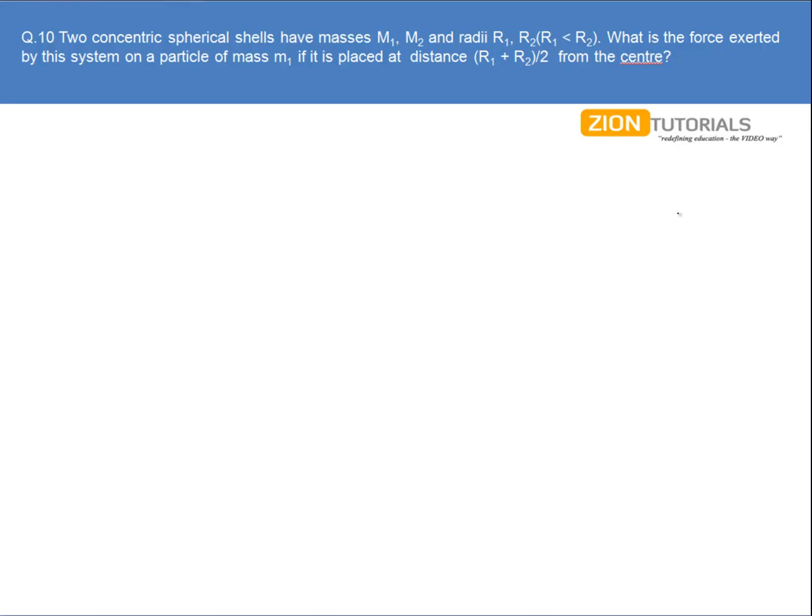Two concentric spherical shells have masses M₁ and M₂ and radii R₁ and R₂. What is the force exerted by this system on a particle of mass m if it is placed at a distance (R₁ + R₂)/2 from the center?